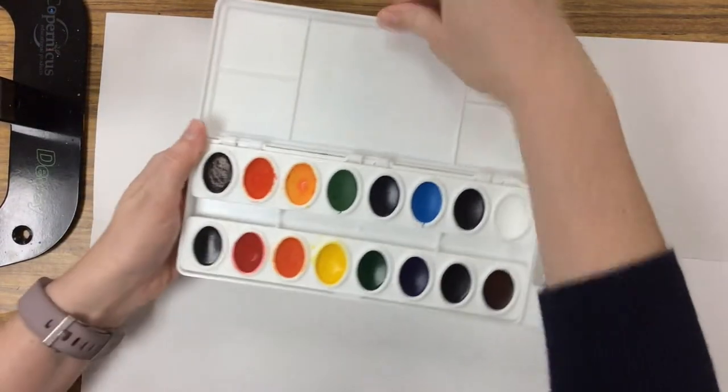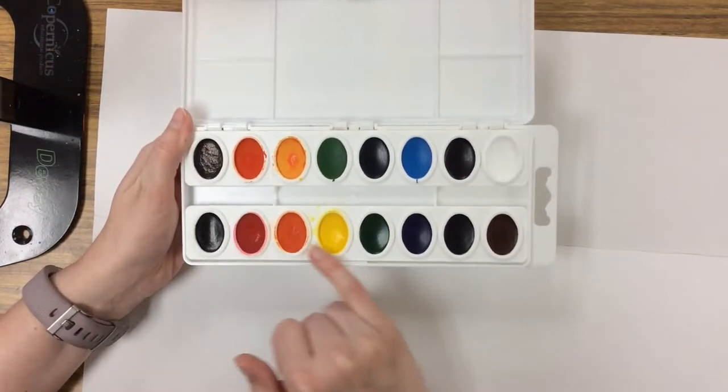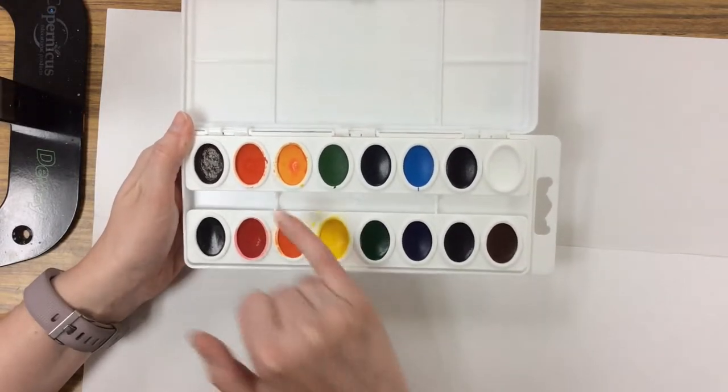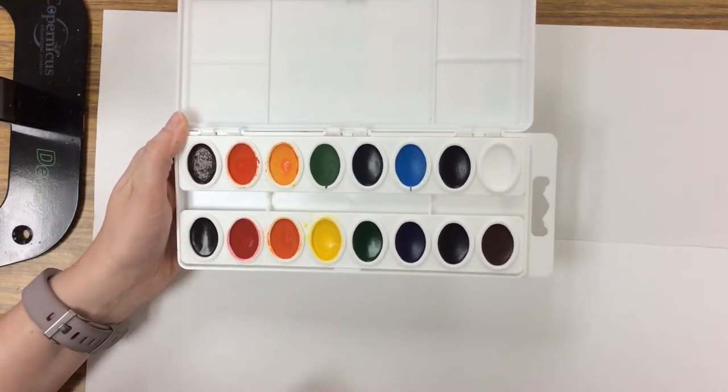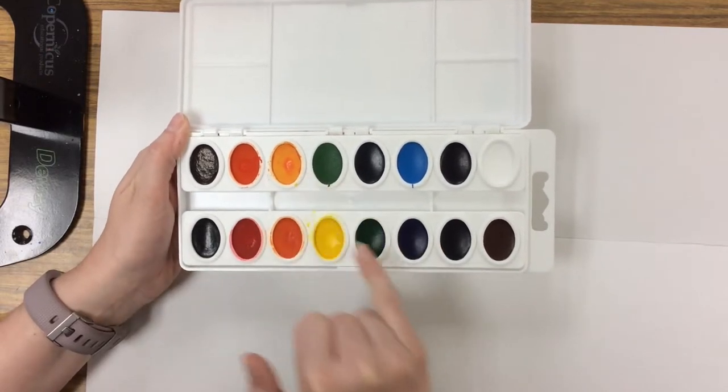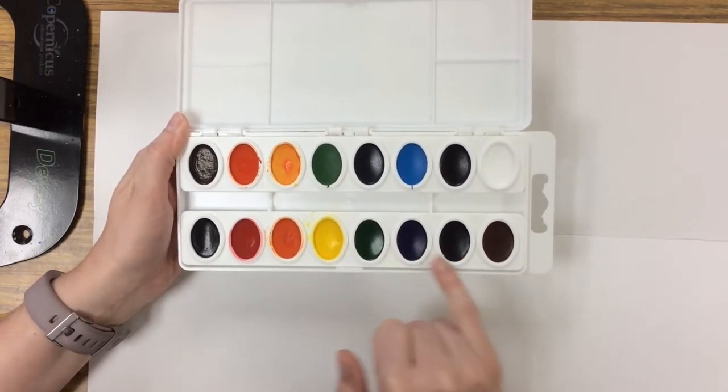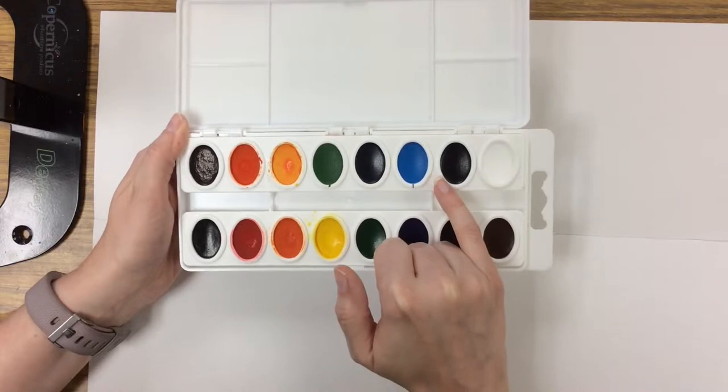Then we're going to paint the sky and paint the water. For our sky we want to stick to our warm colors, so remember that's the first three in the rainbow. For our water we want to use our cool colors, which is the second half of the rainbow.